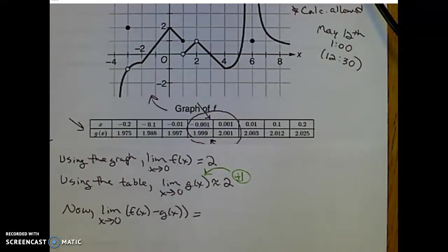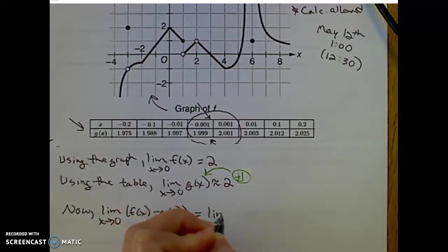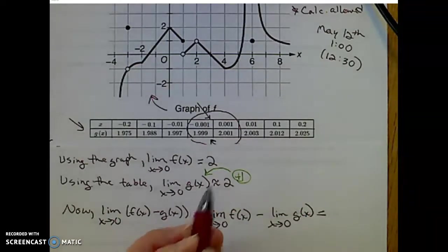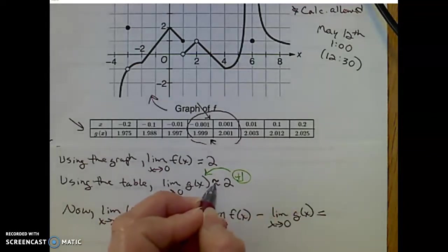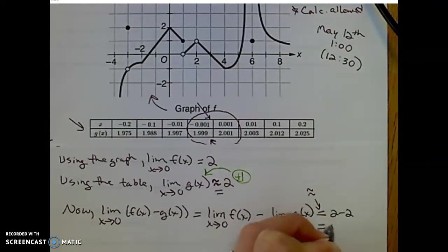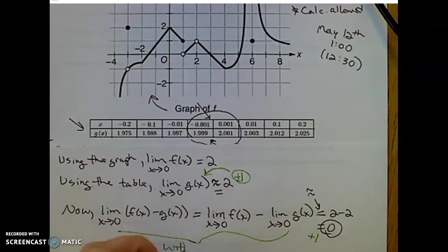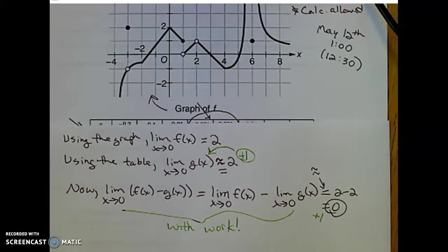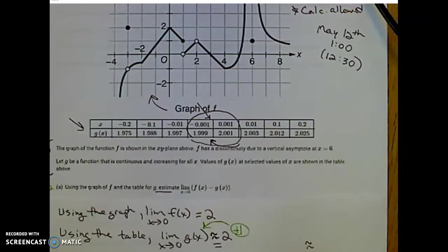We can separate those limits and write the limit as x approaches 0 of f(x) minus g(x) as a difference of two limits. The limit as x approaches 0 of f(x) minus the limit as x approaches 0 of g(x), which is 2 minus 2, equal to 0. You can use approximately or equal to — they're not picky about that. This answer is one point with work. We're going to write things as they want us to write them.